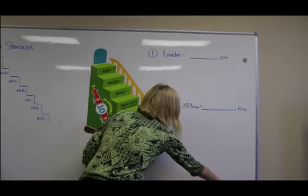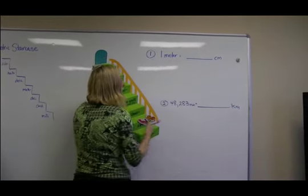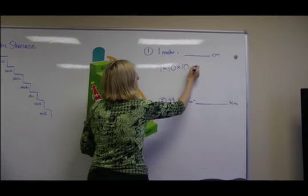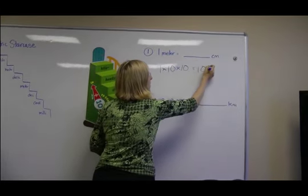So since we walked two steps to solve this problem, you would go one times ten for one step, times ten for the second step. One times ten times ten is one hundred. So one meter is equal to one hundred centimeters.